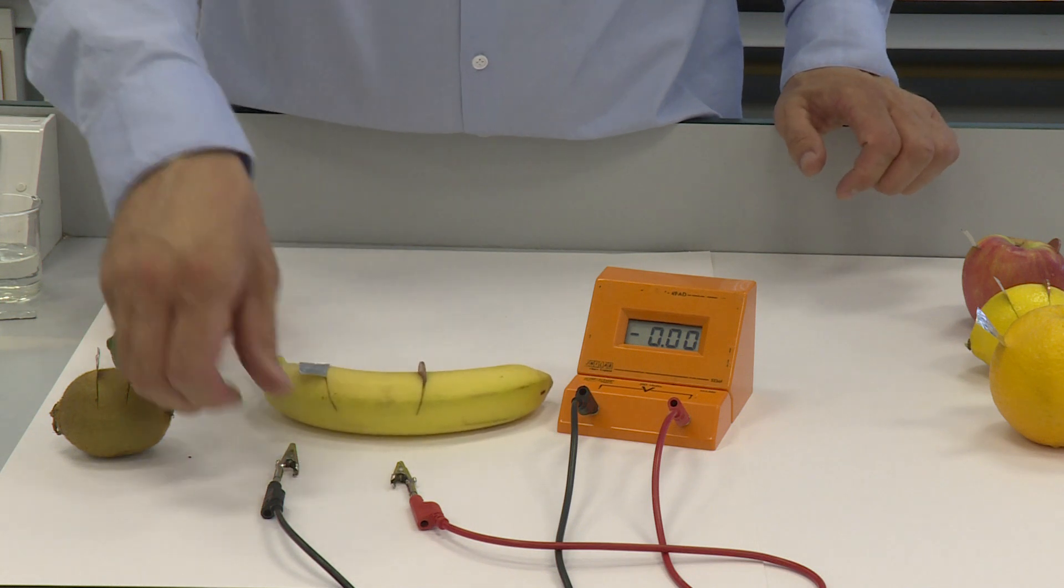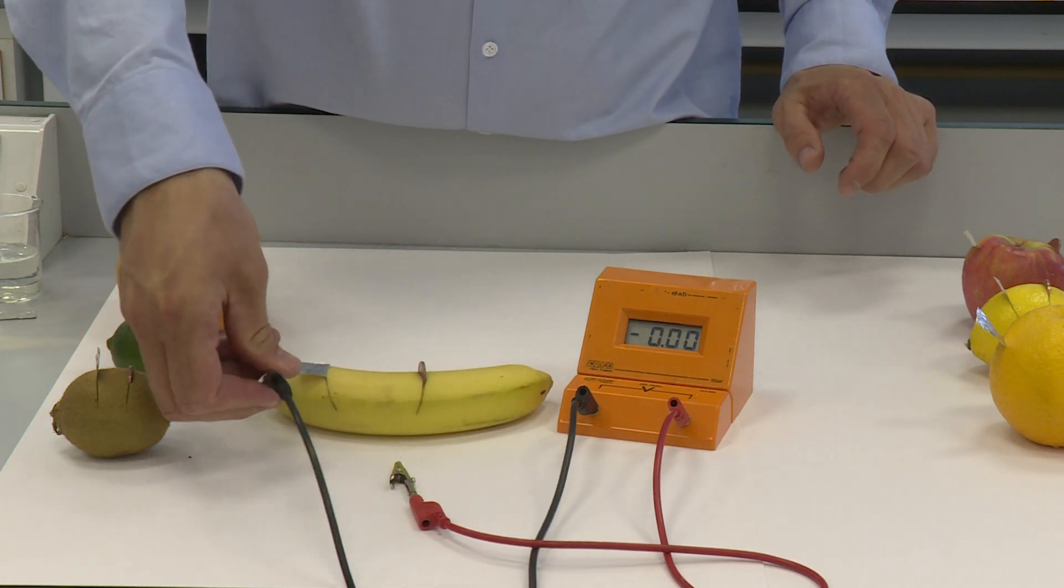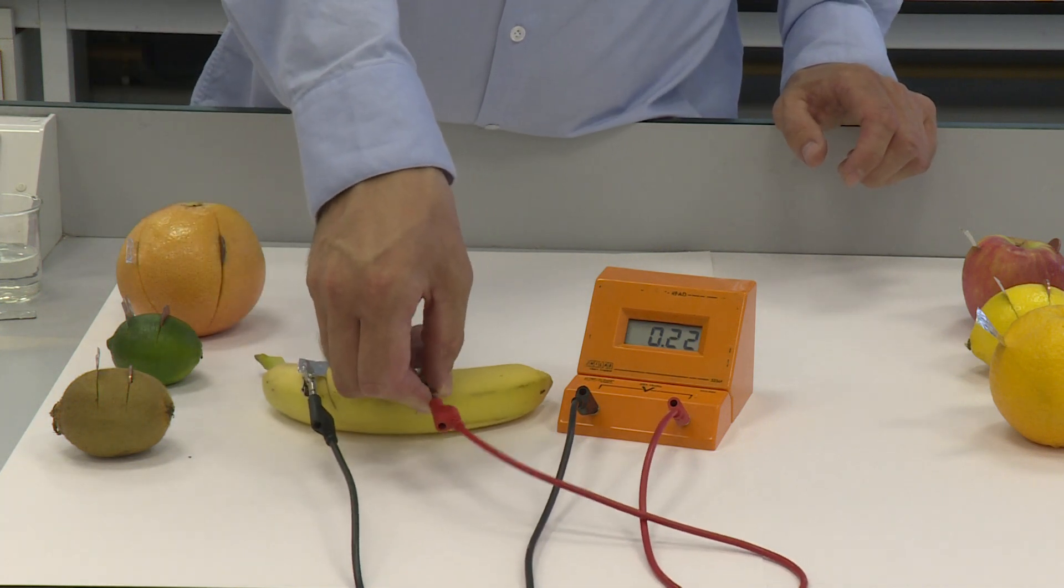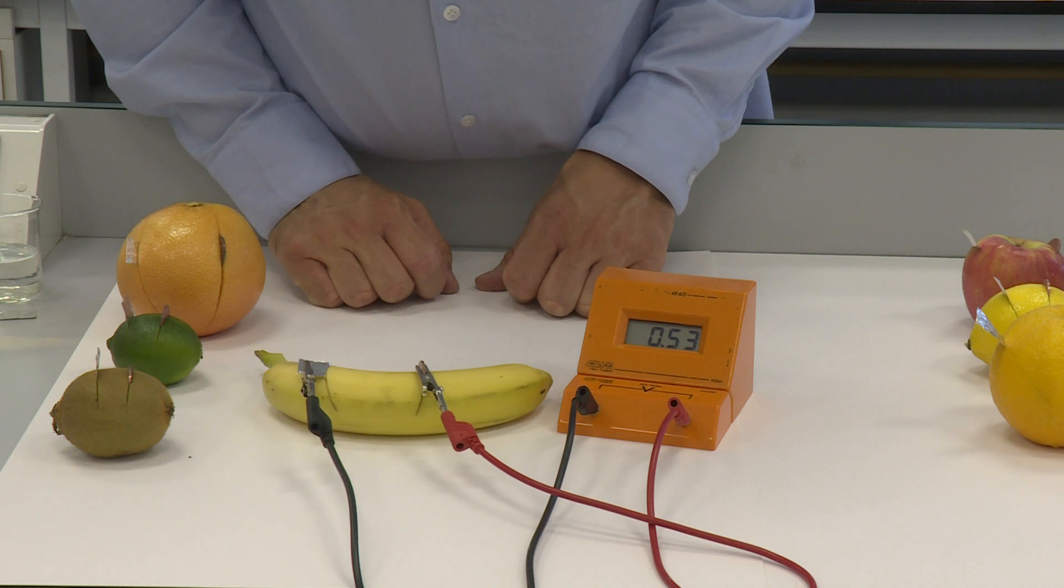The banana. Banana is a little bit lower at around 0.54.